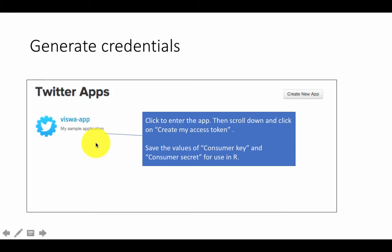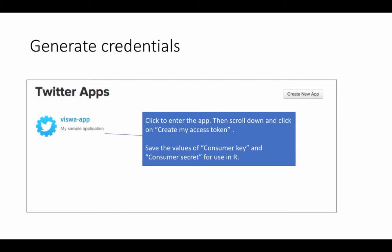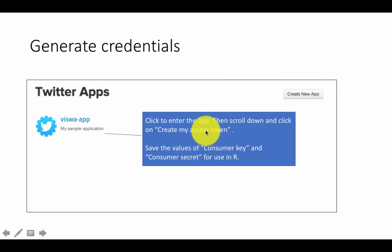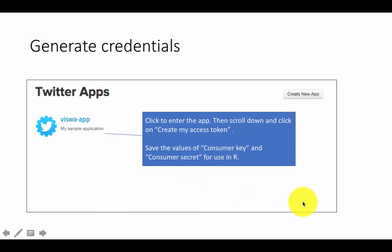Once you create the application, click into it and scroll down to click the link 'Create My Access Token.' When you're downloading tweets you'll be using an R package, and when R connects to Twitter you have to provide identifying information. After clicking 'Create My Access Token,' it will create an access token and show you two important pieces of information: your consumer key and your consumer secret. Note both of these down — you can view them again later from the app's tab and regenerate them if needed. Save these two values for use in R.